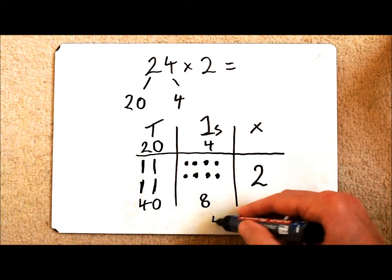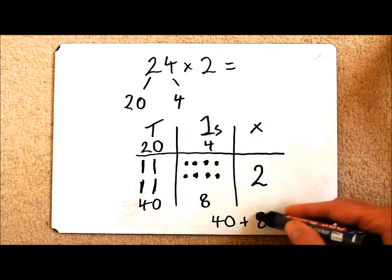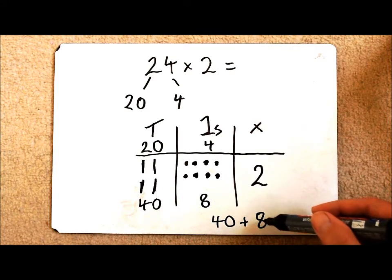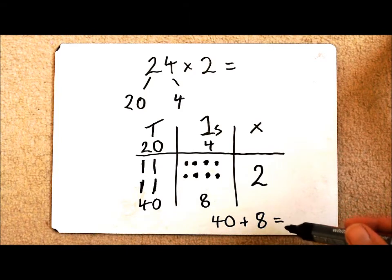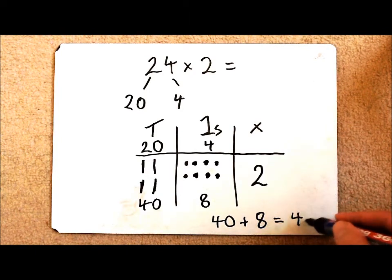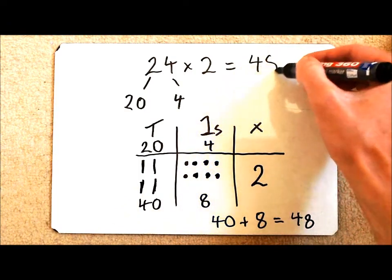All I need to do now is add my numbers together. 40 plus 8. You can either do this in your head by adding on 8, or you could draw a number line or any other written method to get to the answer, which will give you 48. So 24 times 2 is 48.